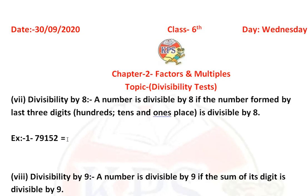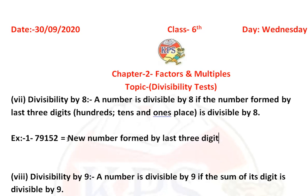Example number 1. First we form the new number using the last three digits of the given number. The given number is 79,152. So the last three digits are 1, 5, and 2. The new number formed by the last three digits is 152.